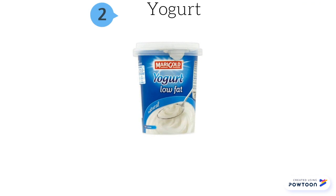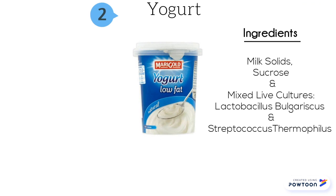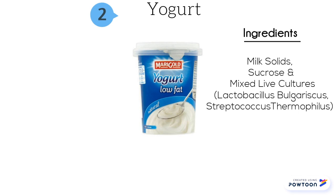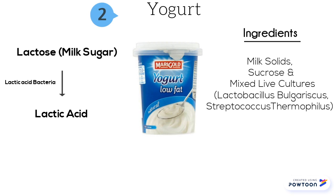Yogurt production uses two main bacterial cultures: Lactobacillus bulgaricus and Streptococcus thermophilus. Both are lactic acid bacteria that produce lactic acid during normal growth. Generally, yogurt has a longer shelf life compared to milk. This is because during fermentation in the production of yogurt, lactic acid produced results in a decrease of pH. Lactic acid bacteria can tolerate the acidic conditions generated; however, growth of other bacteria may be inhibited, thereby prolonging the shelf life.